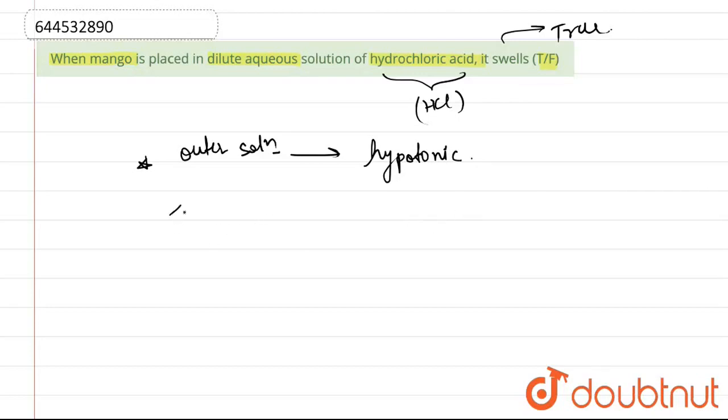Therefore, due to osmosis, water goes inside the mango. So due to osmosis, we can say that the water goes inside the mango. And the reason being it swells.